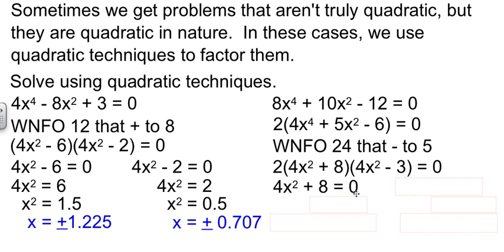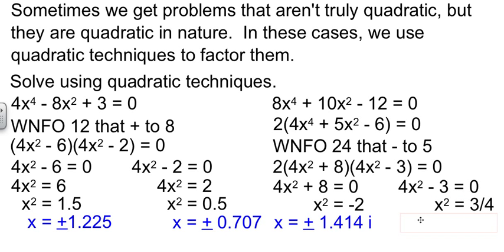The 2's not going to give me a solution, so I can ignore it. 4x² + 8 equals 0. I'm going to subtract the 8 over and then divide by 4 to get to negative 2. And when I take that square root, since it's negative, remember we get an i. Positive and negative 1.414i. The other factor, 4x² - 3 equals 0. Add the 3 and divide by 4. And then take that square root, and it's positive and negative 0.866.